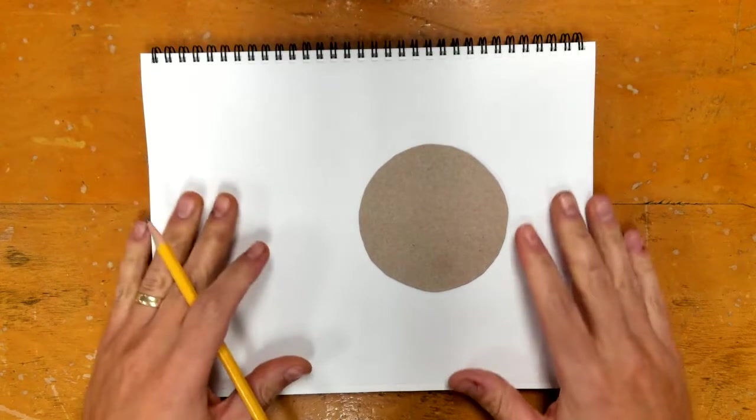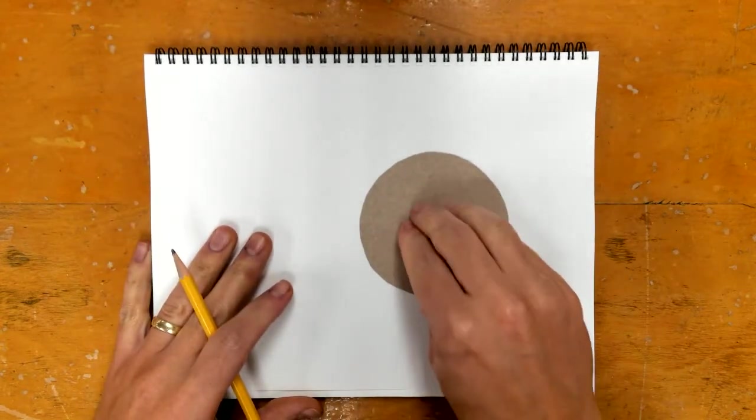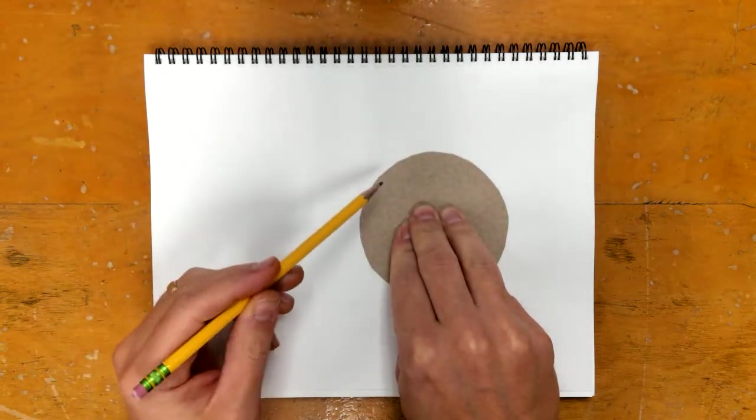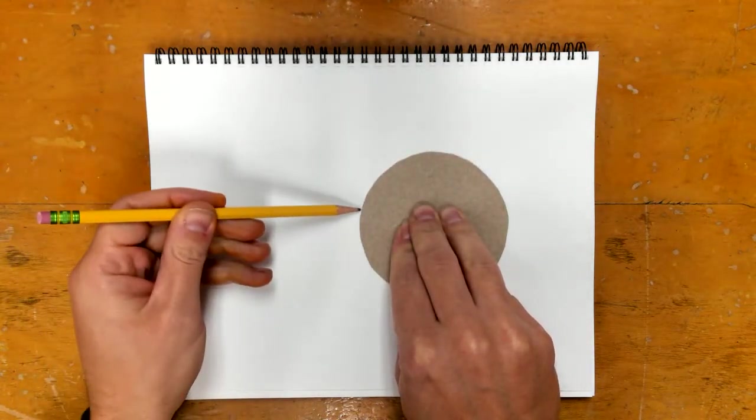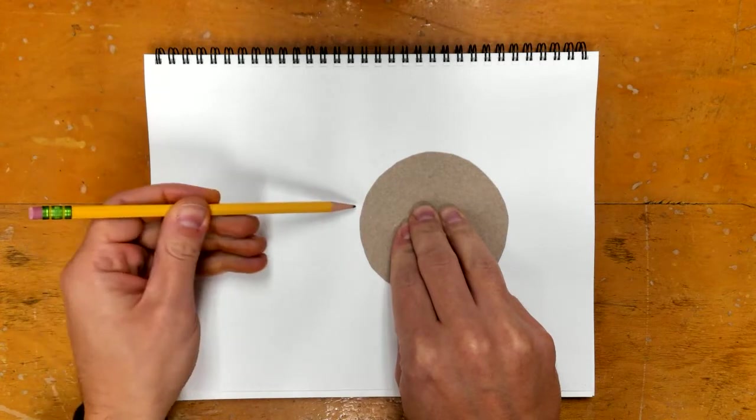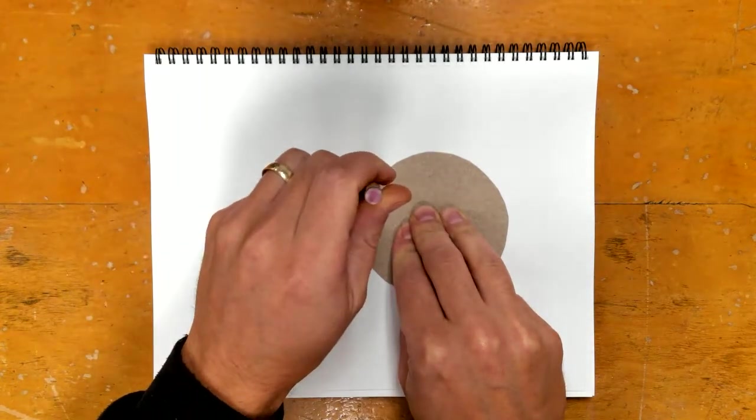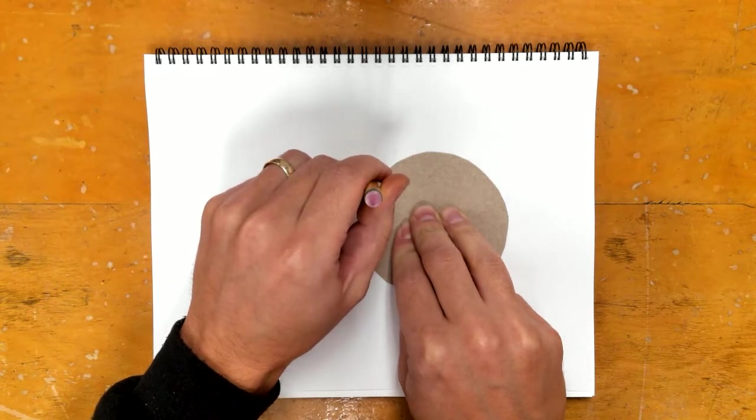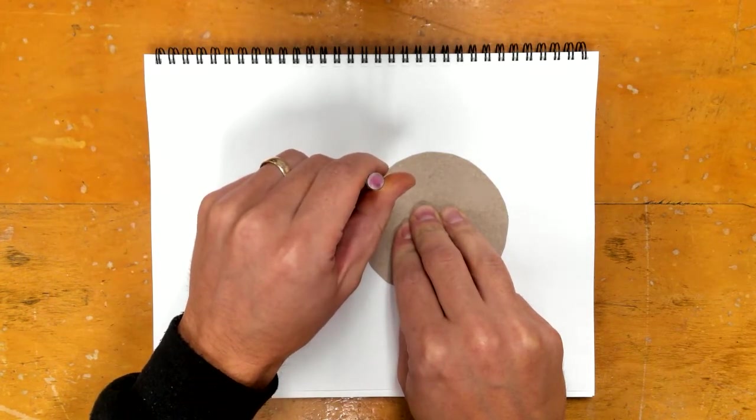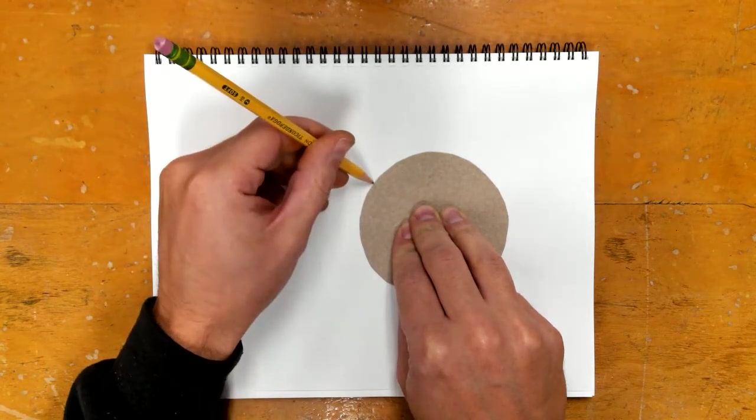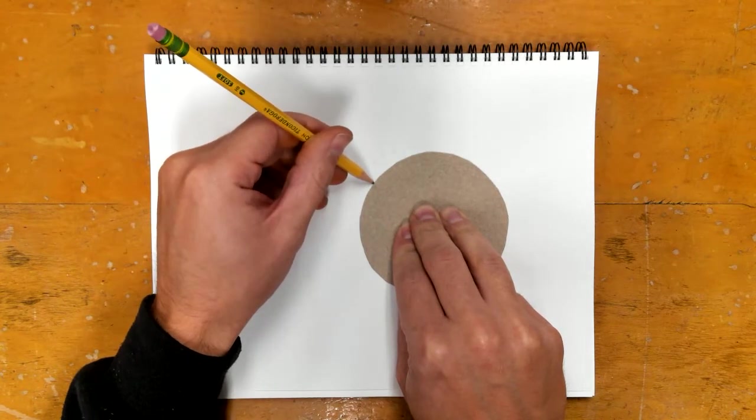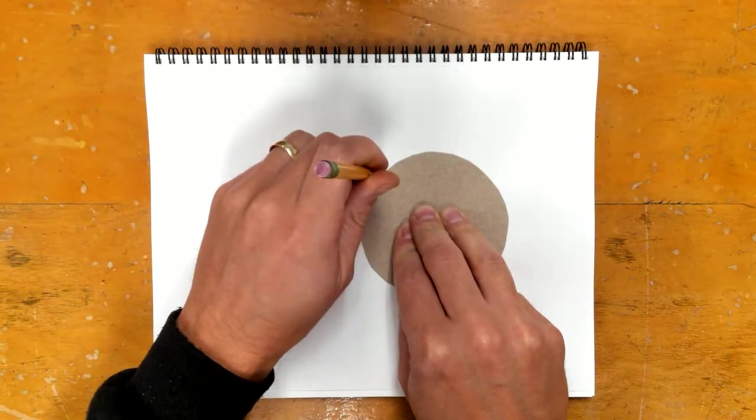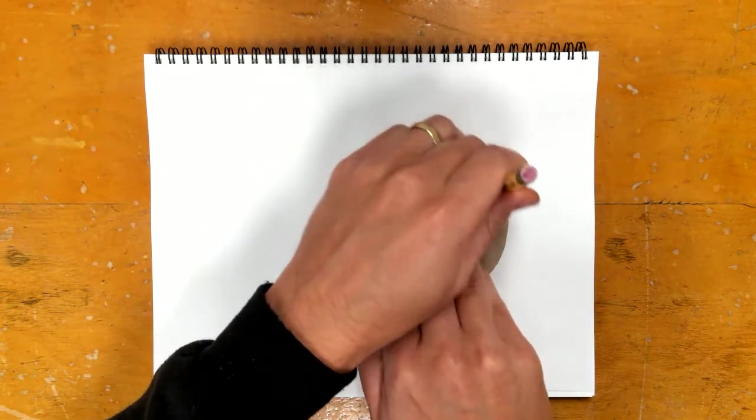Hold it carefully and trace it. When we trace, if our pencil's on an angle like this it's going to go underneath. You want to have it straight up and down. With this camera you can see just the top of the pencil. If you can see any of the pencil here that means I've slanted it. So keep the pencil straight up and down.